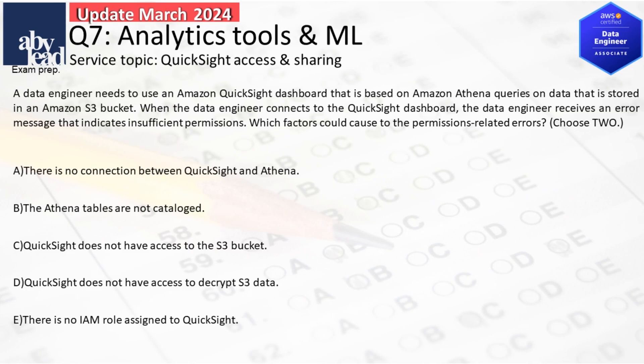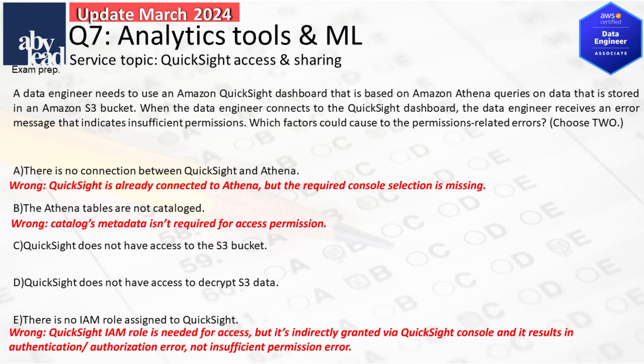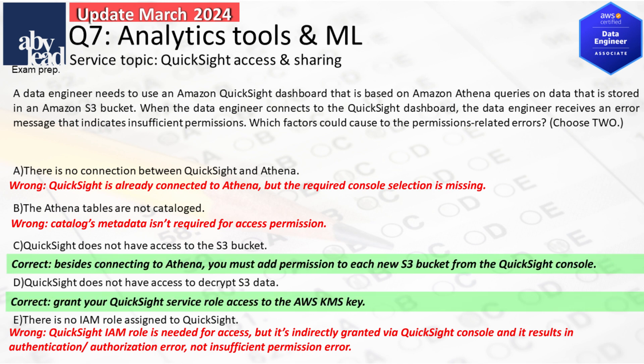Question 7: How do you resolve an insufficient permission error of QuickSight with Athena queries of S3 data? QuickSight's auto-connection to Athena can't be a permission issue. Catalog metadata or an IAM policy setup in QuickSight isn't required for its access. To resolve the error, you must enable each new S3 bucket on the QuickSight console and grant access to the AWS KMS key in your QuickSight service role.